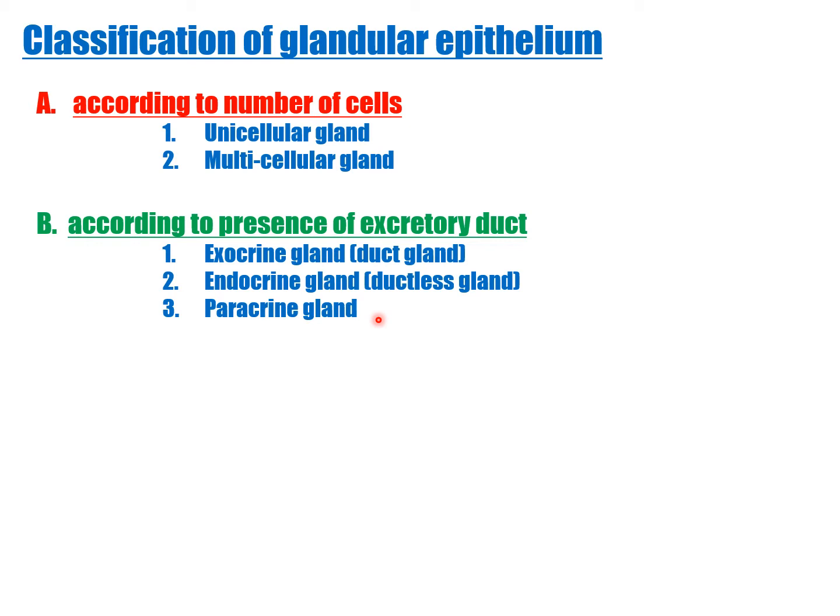Endocrine glands lose contact with the epithelial surface from which they develop and pour their secretion into the blood. They are called internally secreting glands or ductless glands. They secrete their product across the basal lamina into the bloodstream. Examples: thyroid gland, pituitary gland, and adrenal gland. The pancreas has both exocrine and endocrine parts — the islets of Langerhans form the endocrine part.